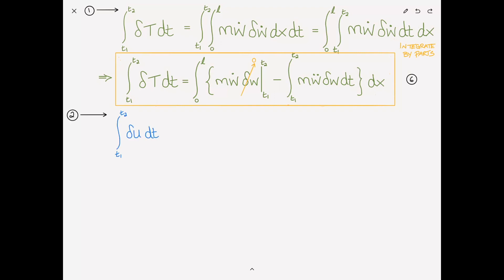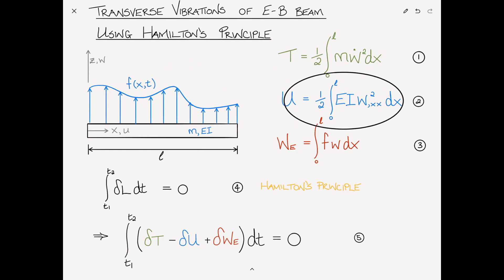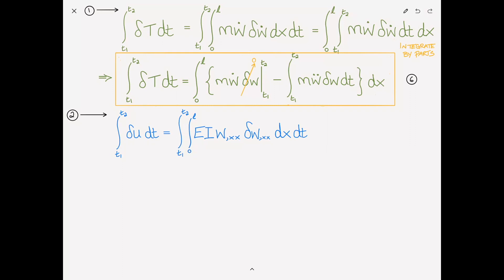We can do a similar treatment with equation 2. The integral from T1 to T2 of the variation of U dt equals the integral from T1 to T2 of the integral from 0 to L of EI W,XX delta W,XX dx dt. We've taken the derivative of this functional with respect to W,XX, giving us EI W,XX times delta W,XX. Since we've got a second derivative, we need to integrate by parts once to get to delta W,X, and then a second time to get to delta W.